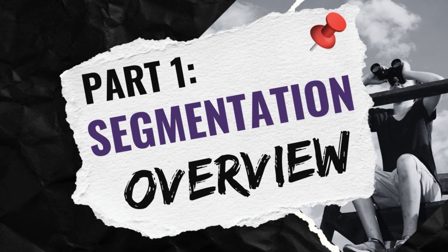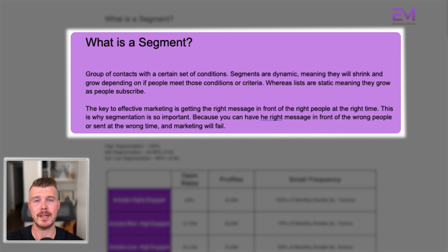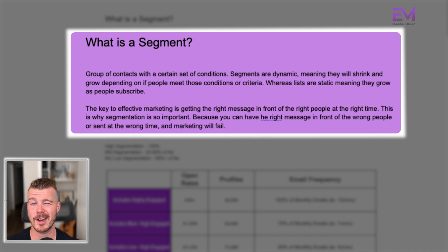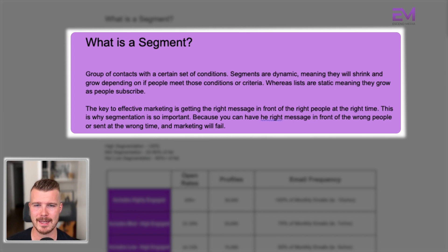What is a segment? A segment is a group of contacts with a certain set of conditions. Segments are dynamic, meaning they're going to shrink and grow depending on whether people meet certain conditions or criteria, whereas lists are static, meaning they grow as people subscribe or unsubscribe. The key to effective marketing is getting the right message in front of the right people at the right time. This is why segmentation is so important — you can have the right message in front of the wrong people or sent at the wrong time, and that marketing will fail.